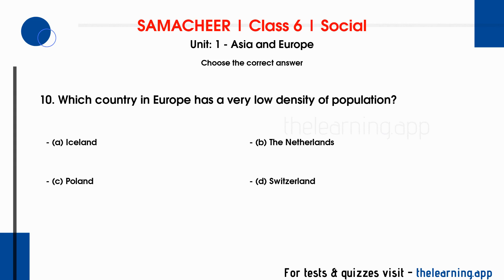Question 10: Which country in Europe has a very low density of population? Options are: A. Iceland, B. the Netherlands, C. Poland, D. Switzerland. Correct answer is A, Iceland.